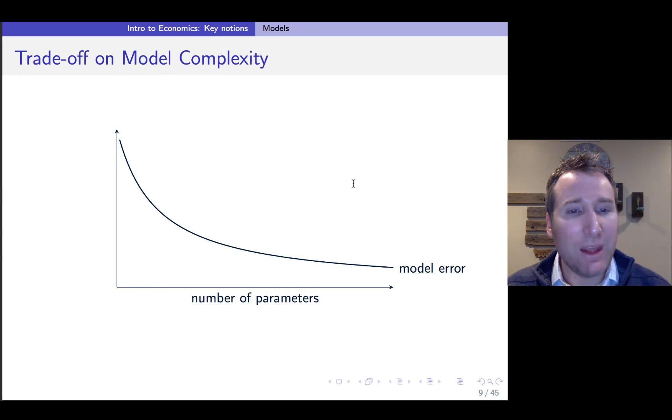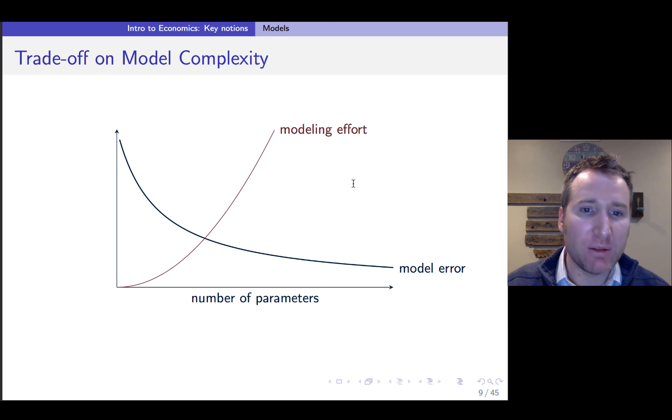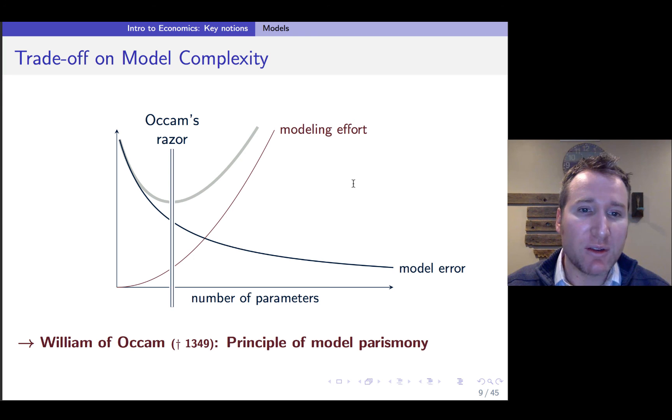So you can sort of visualize this as comparing, as you increase your number of parameters, you're going to drive down your model error. So that seems good, but then your effort in modeling is going to grow up. Certainly your effort to collect data to validate is going to grow exponentially too. So the idea is you'd like to find this sort of sweet spot somewhere along the line here where you've had just enough complexity in your model to actually be informative.